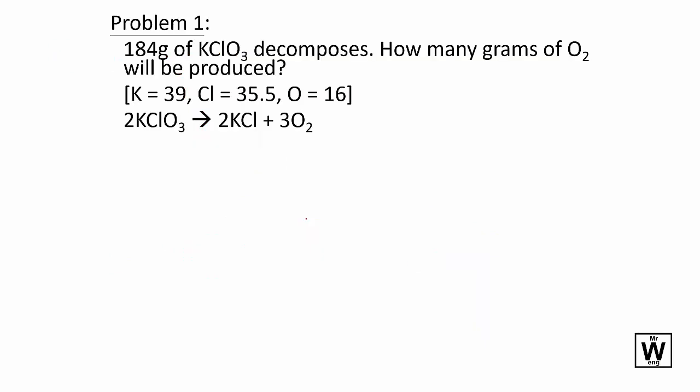Problem 1: 184g of KClO3 decomposes. How many grams of O2 will be produced? It's grams to grams. The balanced equation is 2KClO3 → 2KCl + 3O2. First, convert to moles. Then with the 2:3 ratio, do a conversion for step two. Step three is converting moles back to grams.